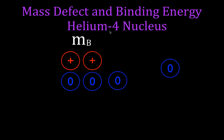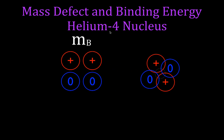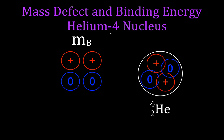Then we're going to take those four things — two protons and two neutrons — and put them together to form a nucleus. That's going to give us our helium-4 nucleus. This is just for the nucleus of the helium-4, and that's going to be the mass afterwards.